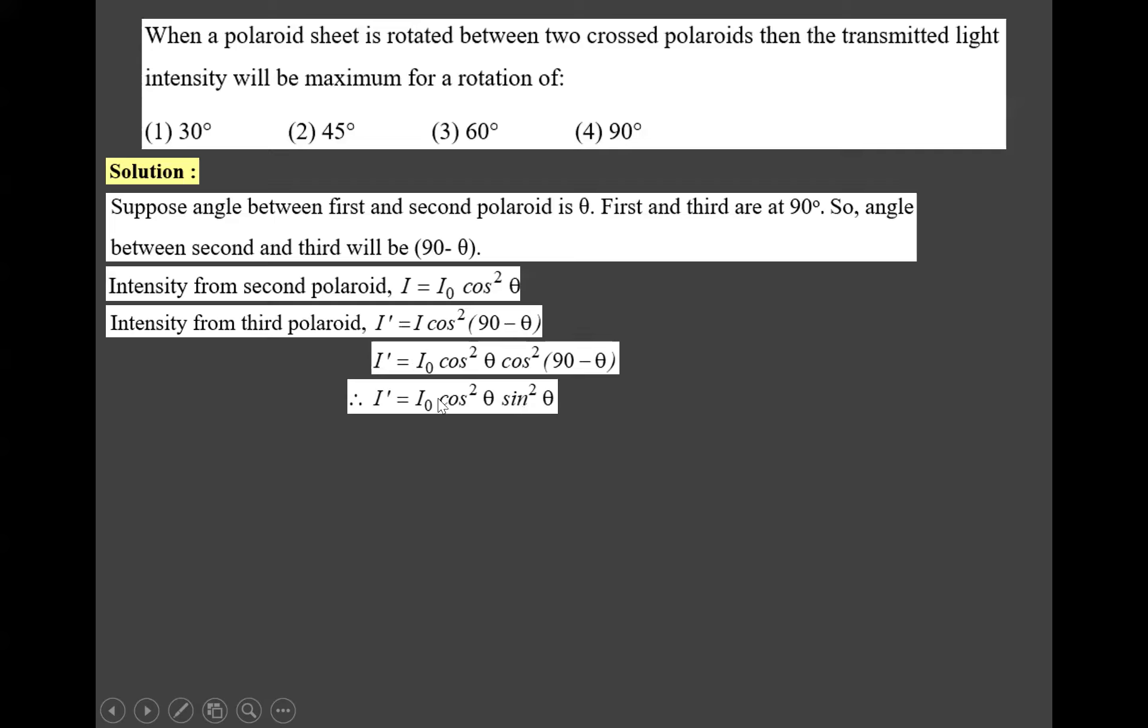If we multiply by 4 and divide by 4, then we can write I₀ times 4 cos² theta sin² theta by 4. We can write that equals (2 sin theta cos theta / 2)². So 2 sin theta cos theta is sin 2theta whole squared, and 2 squared is 4. So we can write I' equals I₀/4 sin² 2theta.